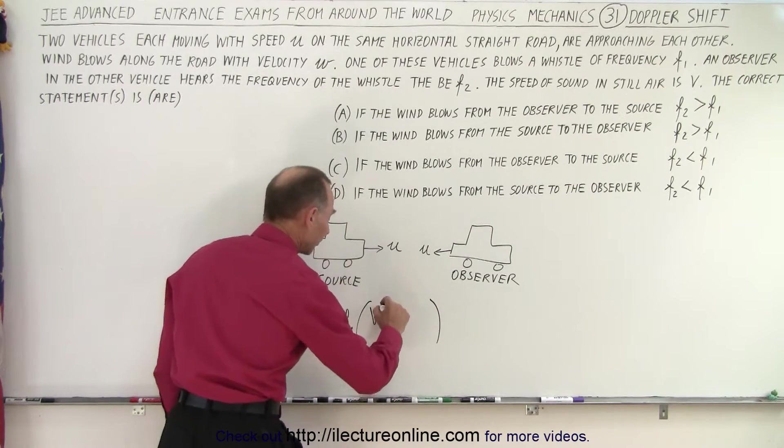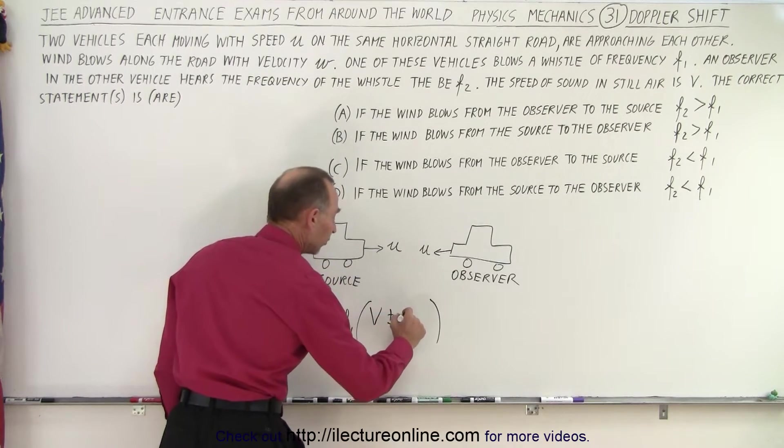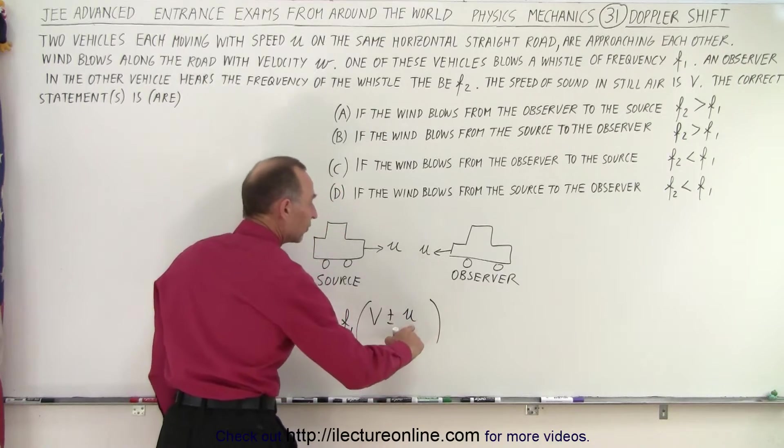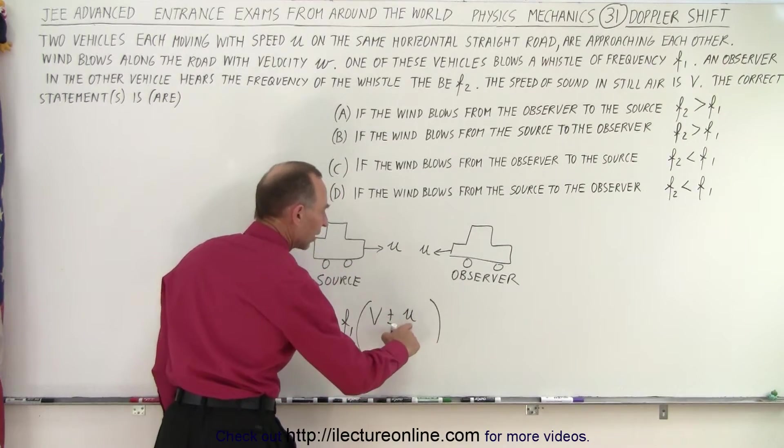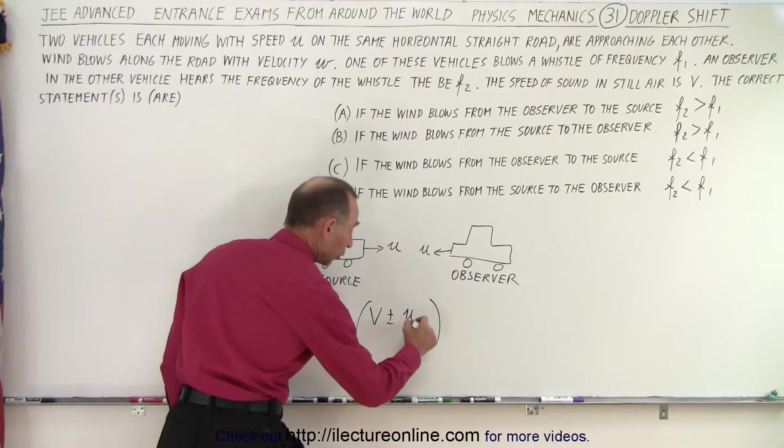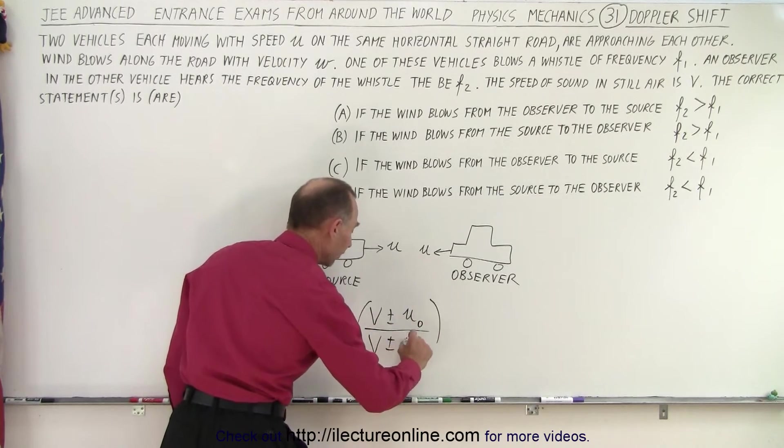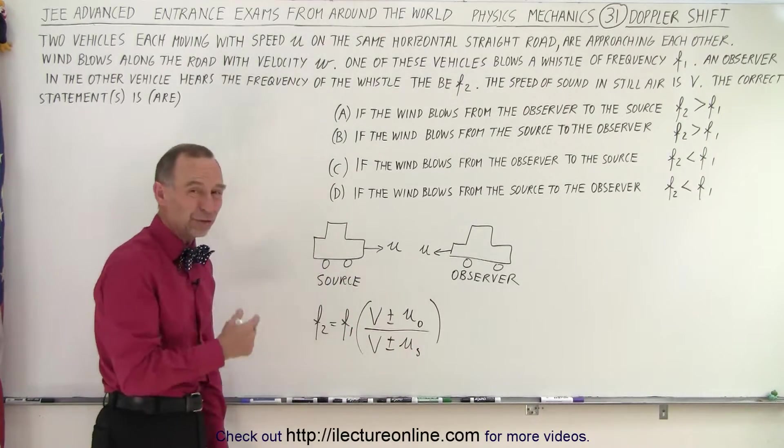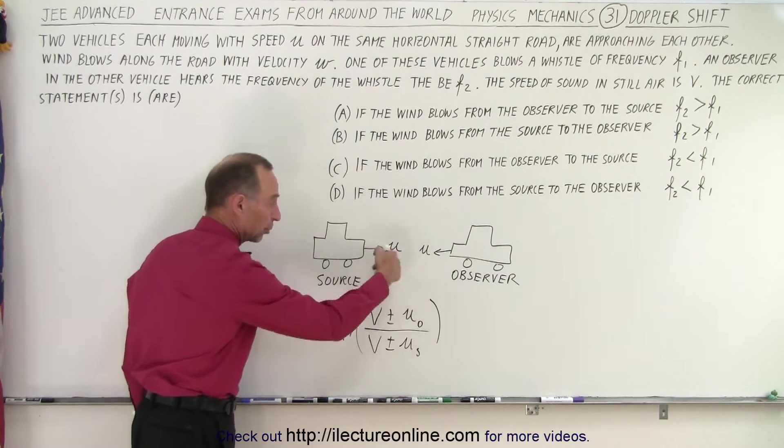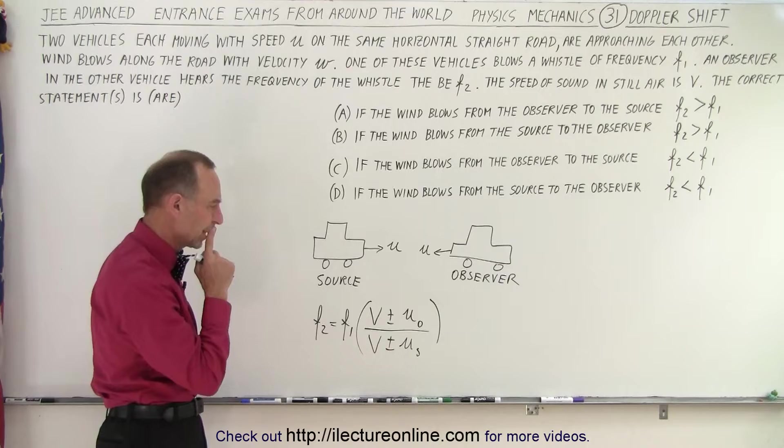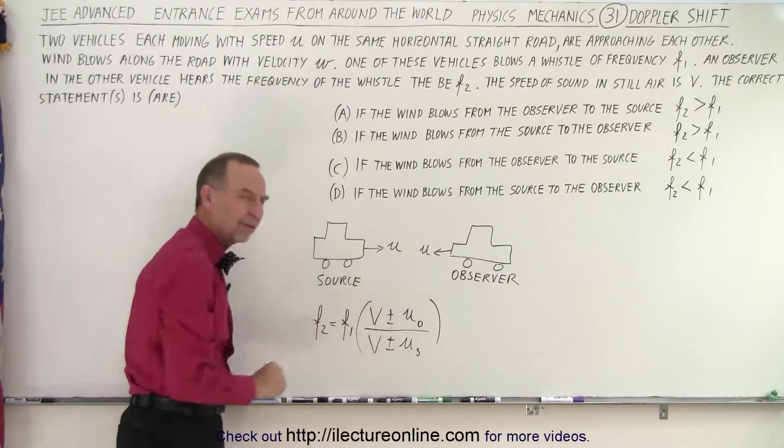times the velocity of sound in air plus and minus the velocity of the observer, so I'll write O for the observer, divided by V plus and minus the velocity of the source. Now in this case, we don't need to write observer and source because we know the velocities are the same.